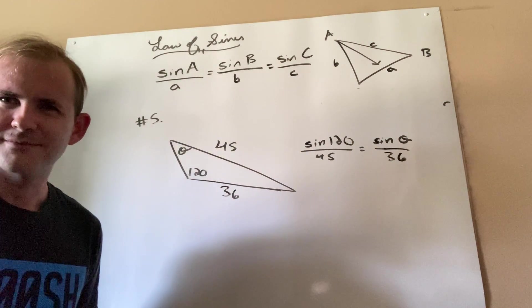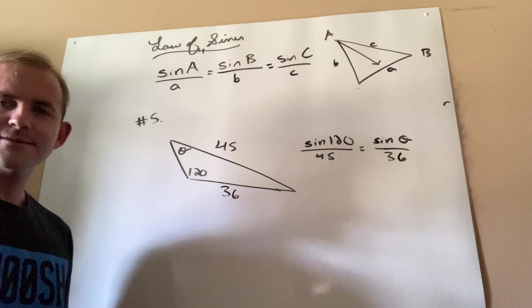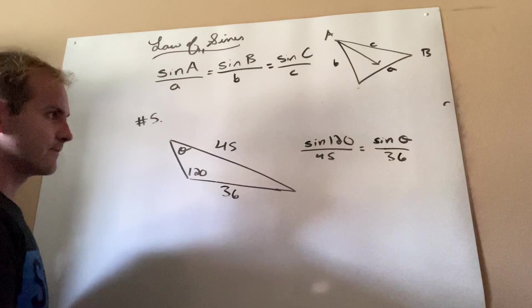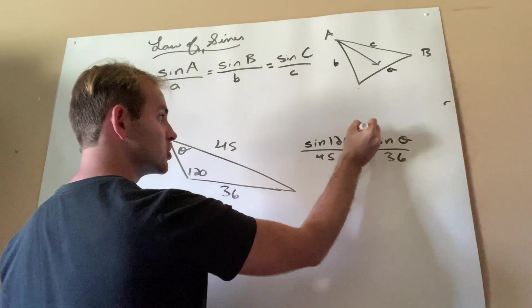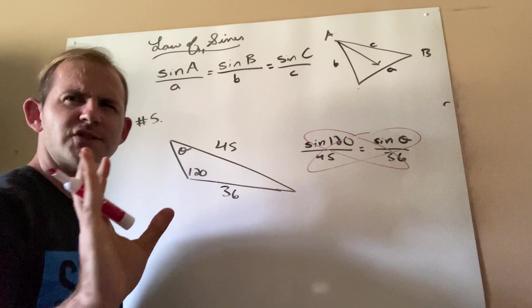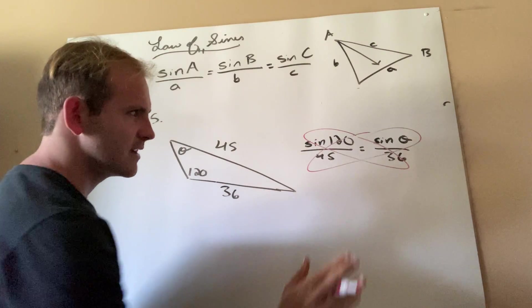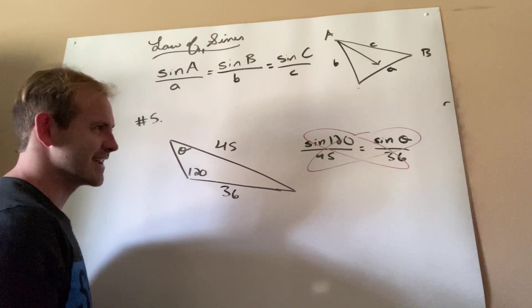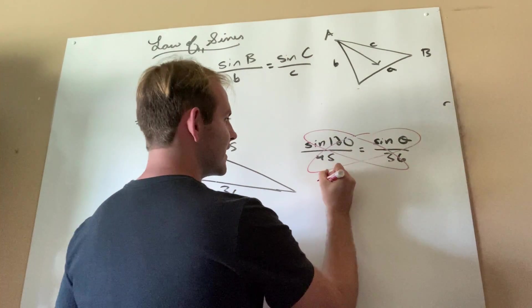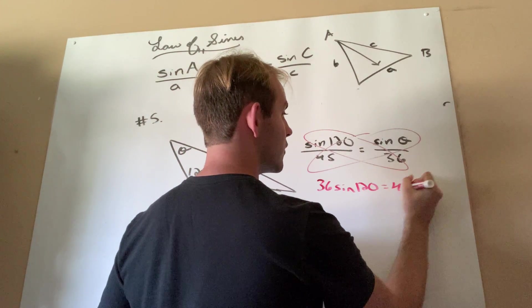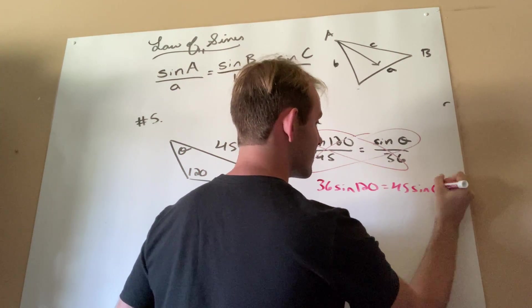Thus far, nothing different guys. Exactly the same method as we did, for example, number one. In order to solve a proportional equation, normally we cross multiply. Some of you guys here might see an easier way by just multiplying both sides by the 36 and you'd be absolutely right. But again, pretend I didn't say that.